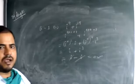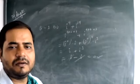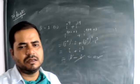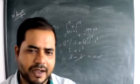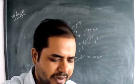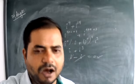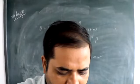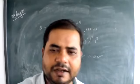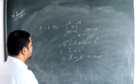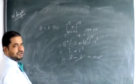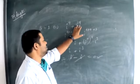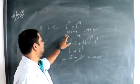We are going to discuss Exercise 5.1. The first question, second part is i to the power 9 plus i to the power 19. The third part is i to the power 39 minus 39. So we have i to the power 9 plus i to the power 19.